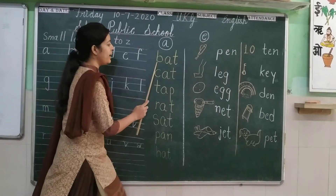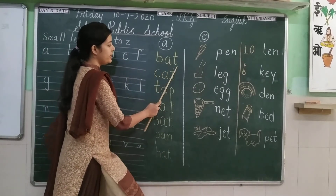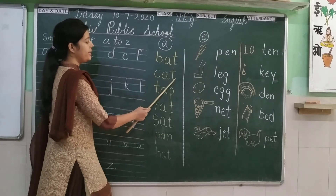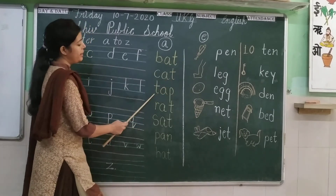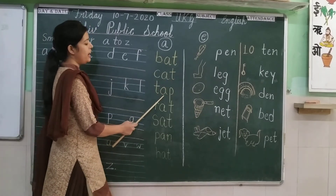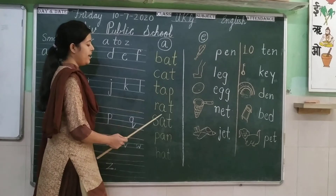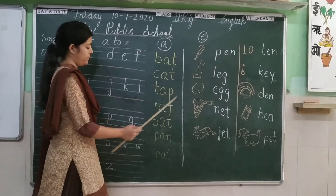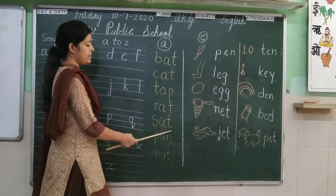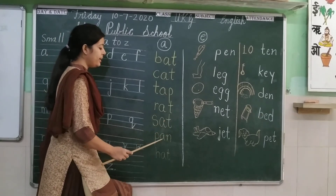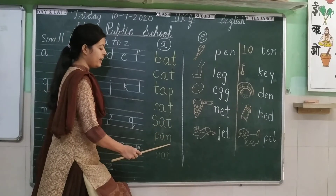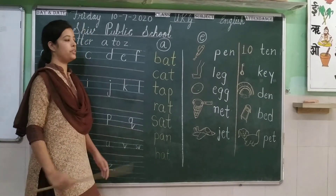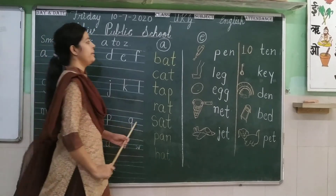Let's read again: B-A-T, bat. C-A-T, cat. T-A-T, tat. R-A-T, rat. S-A-T, sat. T-A-N, tan. H-A-T, hat.